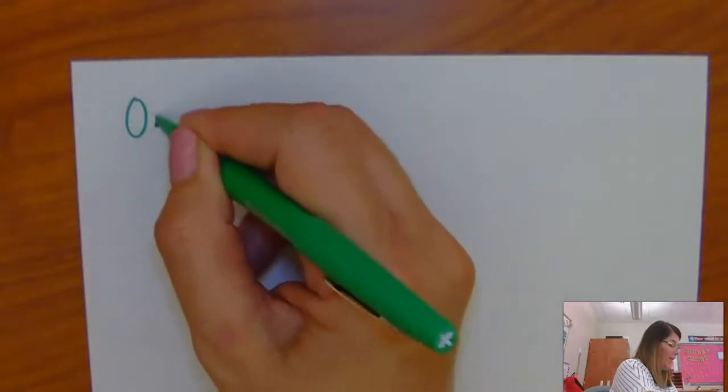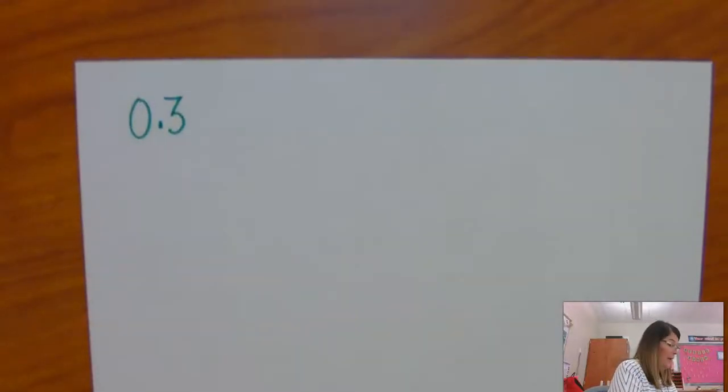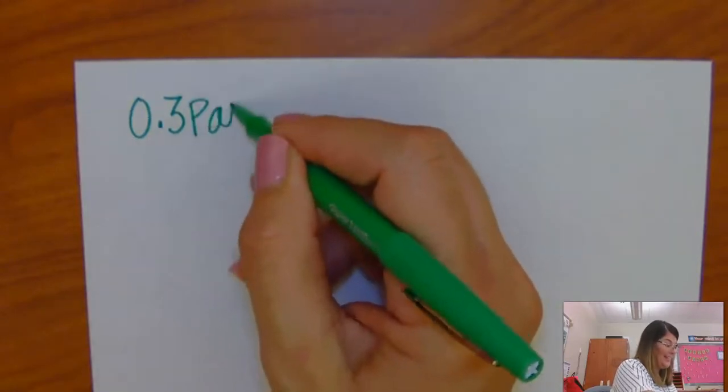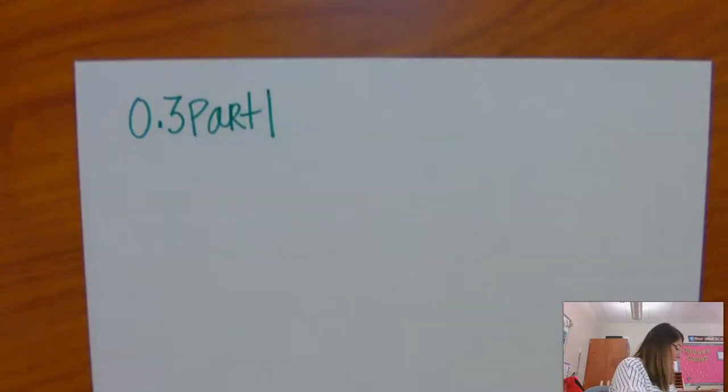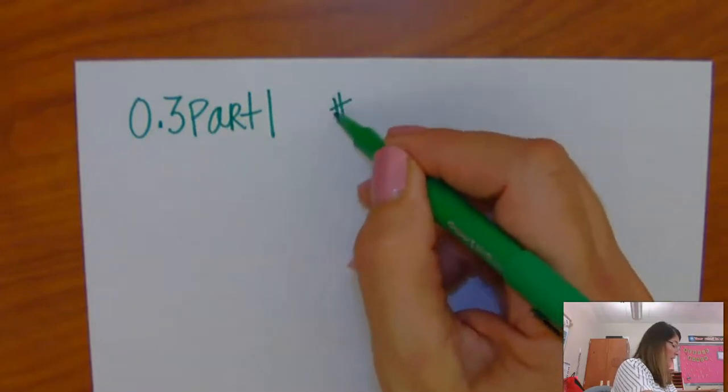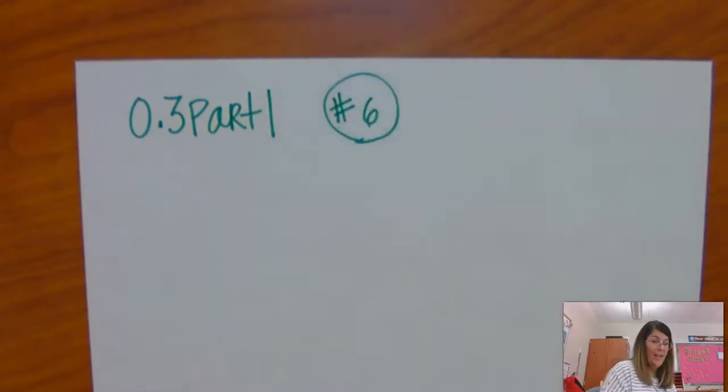Okay, let's talk about if you are having trouble with homework problem 0.3, part 1. Let's say you're having trouble with number 6. So, number 6 looks like this.